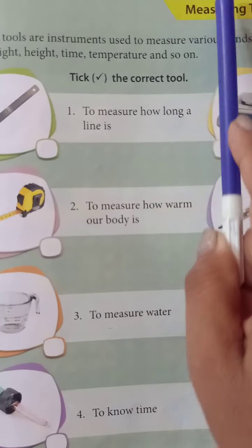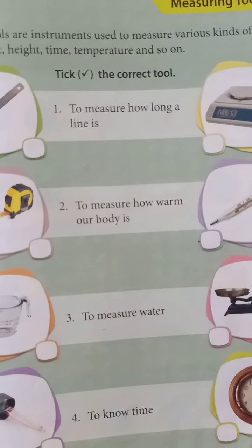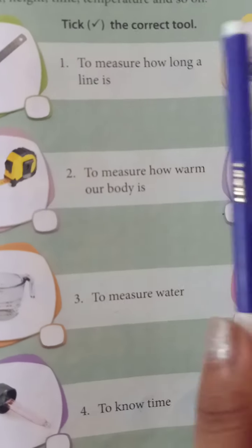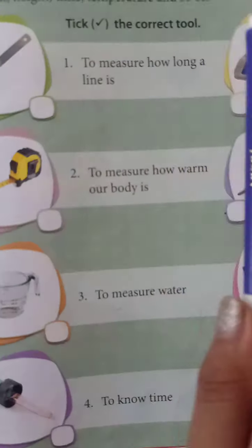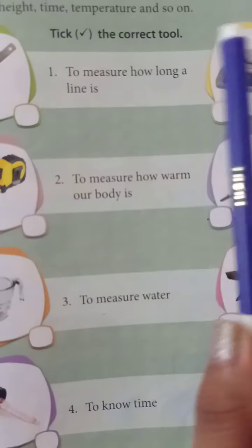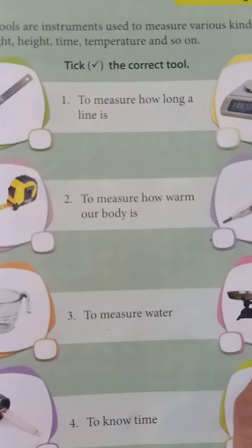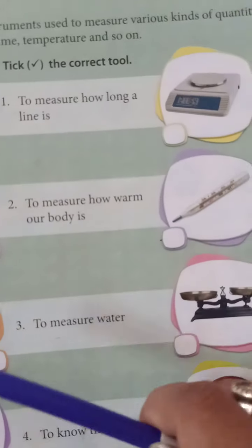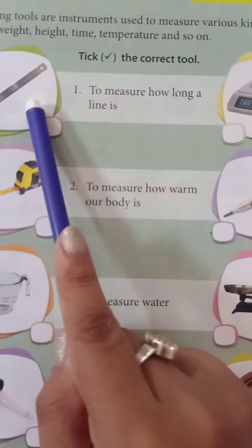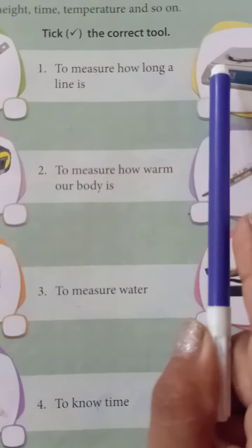Now, how long is a line? So which tool do we use? One option is a scale, and the other is a weighing machine. So tell me — which one do we use to measure length?